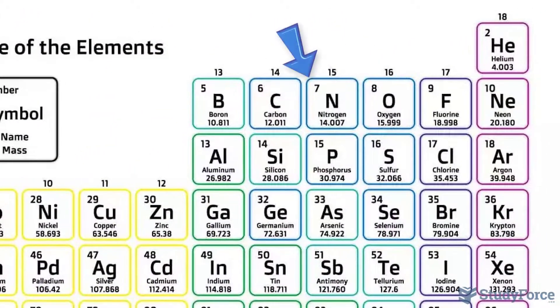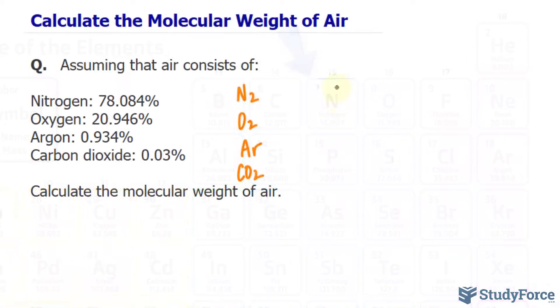For example, nitrogen has a molecular weight of 14.007 grams per mole, and because there are two nitrogen atoms for every molecule, we multiply this by two.